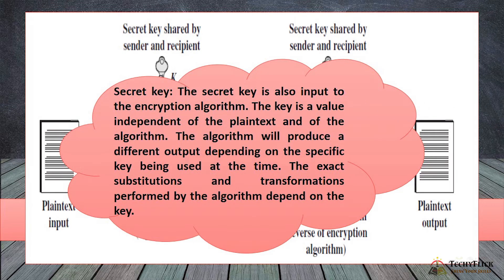The encryption algorithm is used to convert the plain text into ciphertext. Secret Key is also input to the encryption algorithm. The key is a value independent of the plain text and of the algorithm. The algorithm will produce a different output depending on the specific key being used at the time. The exact substitutions and transformations performed by the algorithm depend on the key.